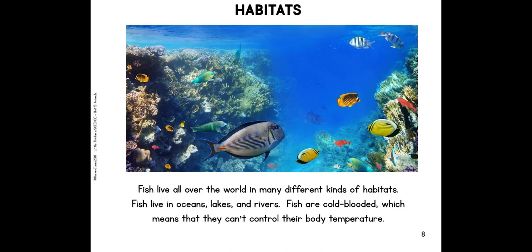Habitats. Fish live all over the world in many different kinds of habitats. Fish live in oceans, lakes, and rivers. Fish are cold-blooded, which means that they can't control their body temperature.